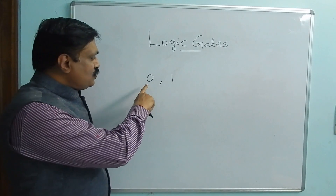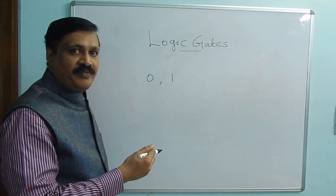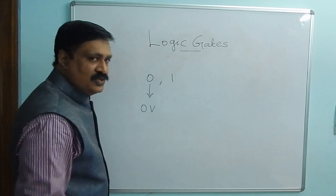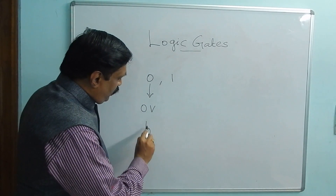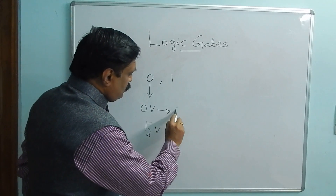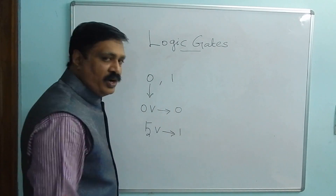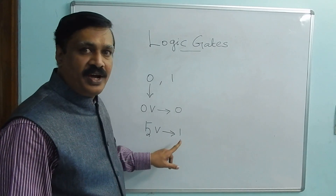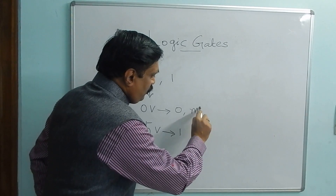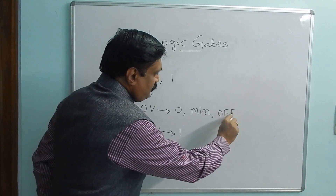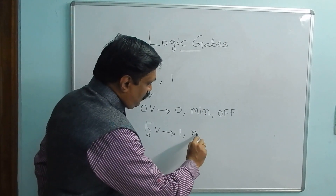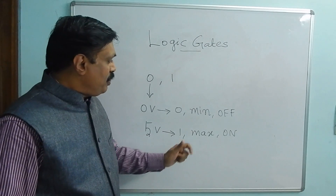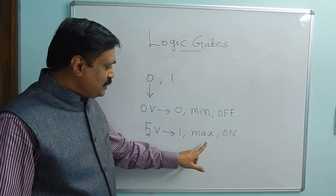Then how are 0 and 1 recognized by the computer as numbers? Here 0 means 0 voltage and 1 means 5 volts. 0 voltage is represented as 0 and 5 voltage is represented as 1. 0 means it is minimum or off state. 1 means it is maximum or on state. Hereafter, whenever I refer, minimum means it is 0 and maximum means it is 1.